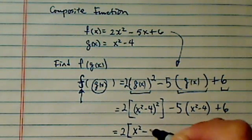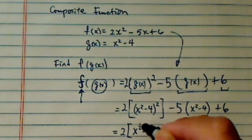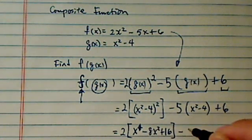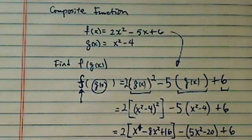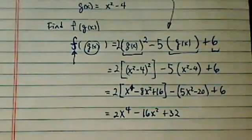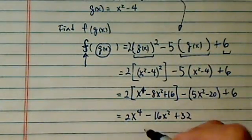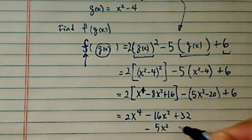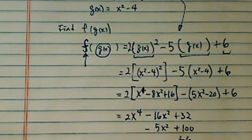(x² - 4)² equals x⁴ minus 8x² plus 16—this is to the fourth actually. Minus, let's put a 5 in there, x² minus 20 plus 6. Now I'm going to open it up: 2x⁴ - 16x² + 32. Minus 5x² plus 100, and I have plus 6. Let's add it up.